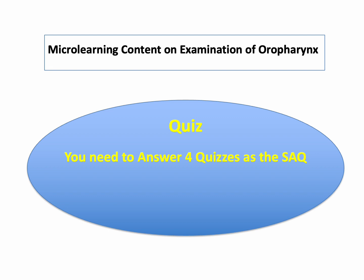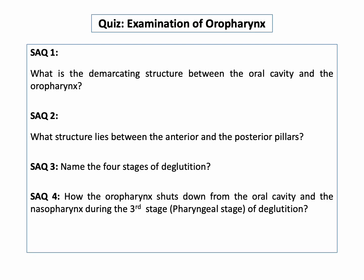It's time for a quiz. There are four short answer questions. SAQ1: What is the demarcating structure between the oral cavity and the oropharynx? SAQ2: What structure lies between the anterior pillar and the posterior pillar? SAQ3: Name the four stages of deglutition. SAQ4: How does the oropharynx shut off from the oral cavity and the nasopharynx during the third, or pharyngeal, stage of deglutition?